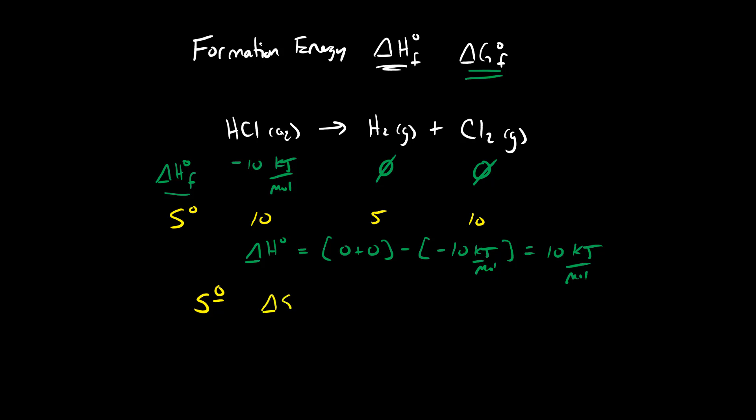You can calculate the entropy of this reaction by adding up products. So we have 5 plus 10, subtracting the reactants. In this case, we're going to have 15 minus 10. So it's going to be 5, and the unit will be joules per mole Kelvin.